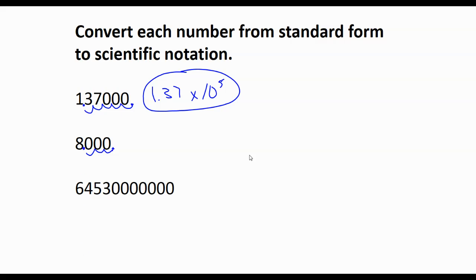8 is between 1 and 10, so my decimal is now there. So my new answer is going to be 8 or 8.0. It doesn't matter what you wrote. Times 10 to the third power, because I moved the decimal three places.